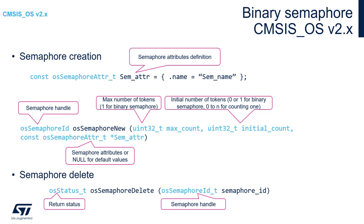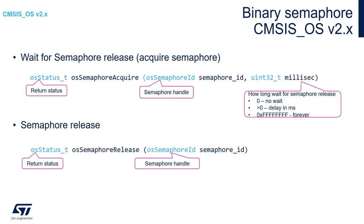Similar functions are used for counting semaphores — the only difference is the maximum number of tokens specified within osSemaphoreNew. Other functions for semaphores are common to both binary and counting ones. To wait for a semaphore, we use the osSemaphoreAcquire function with two arguments: the semaphore handler and a timeout in milliseconds, telling the scheduler how long we would like to wait.